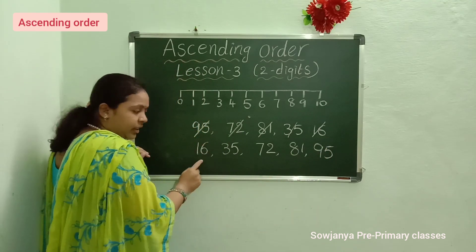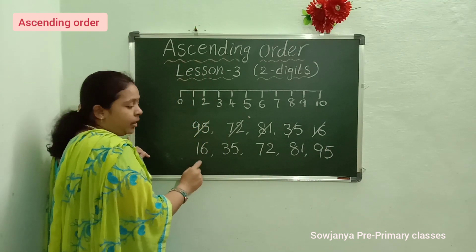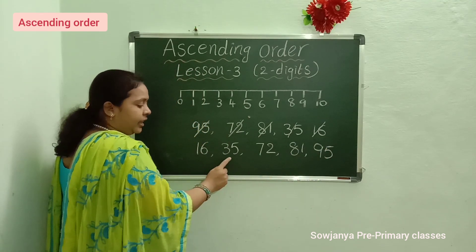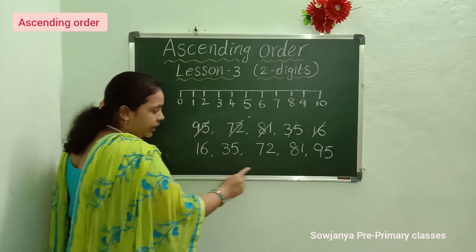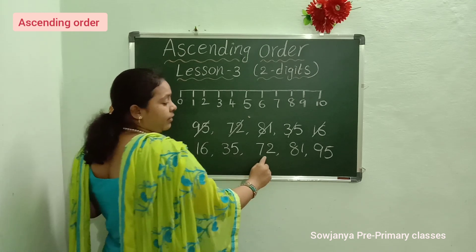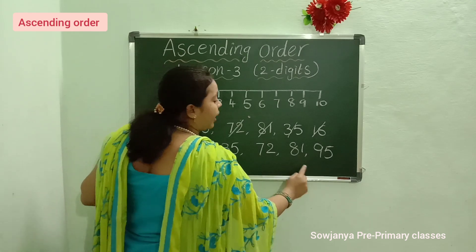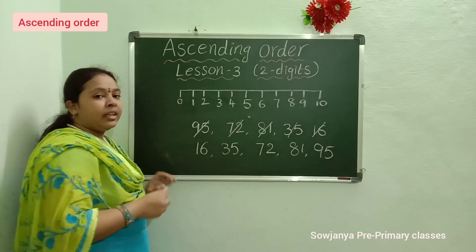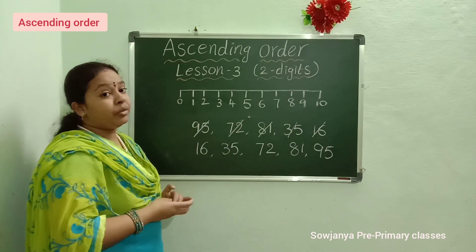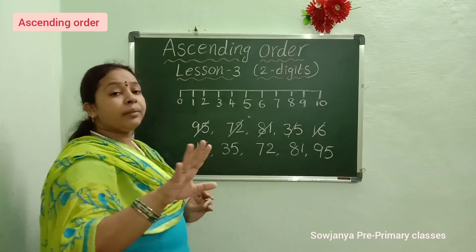See? 16 is the small number. After that, 35. After 35 comes 72. After 72 comes 81. After 81 comes 95.